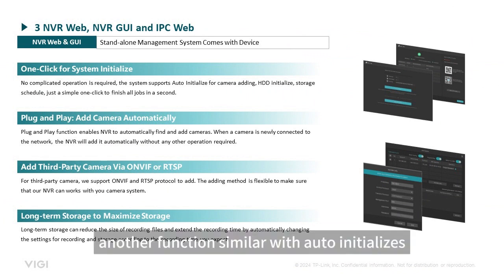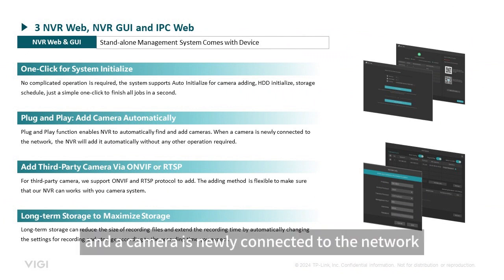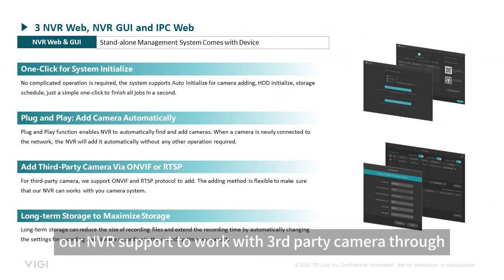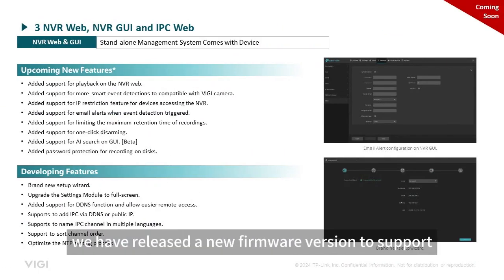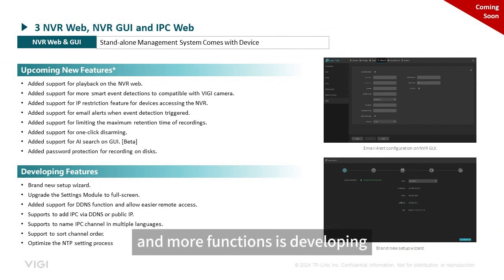Another function similar to auto-initialize is plug and play. When this function is enabled and a camera is newly connected to the network, the NVR will add it automatically without any other operation required. Our NVR also supports working with third-party cameras through ONVIF or RTSP protocol. Recently, we have released a new firmware version to support richer functions, and more functions are in development.